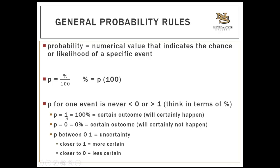If the probability equals 1, that's a 100% chance — a certain outcome. If the probability equals 0, there's a 0% chance — you're certain it won't happen. What we're usually concerned with is probability between 0 and 1 — the margin of uncertainty. As probability gets closer to 1, we're more certain the event will happen; as it gets closer to 0, we predict it's probably not likely to occur.